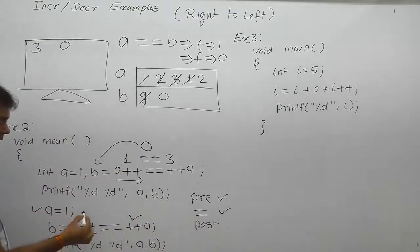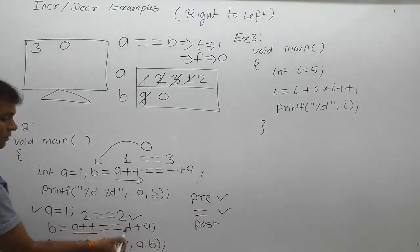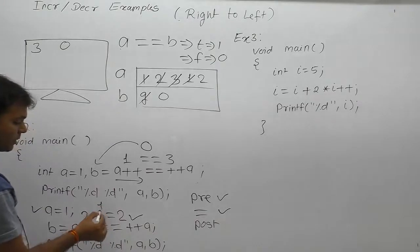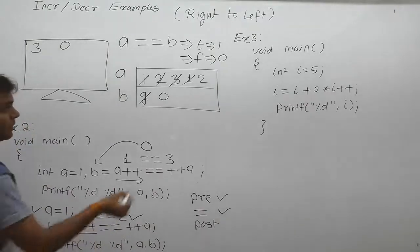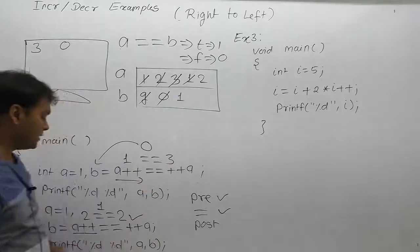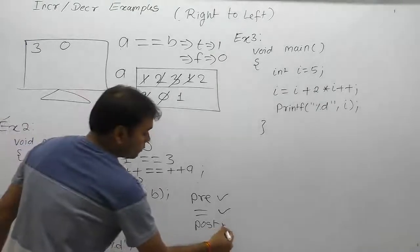Next one, assignment. According to assignment, replace current value of a which is two, equal equal. Again plus plus a, replace with same value of a is two. Two equal equal two becomes true. True means one. In that case, one is assigned to variable b. Previous case, b value was zero, but in that case one according to assignment.